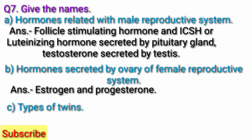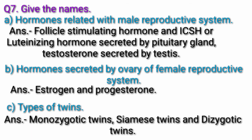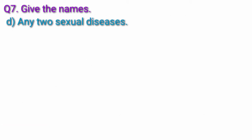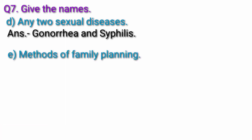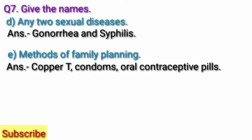C. Types of twins. Answer: Monozygotic twins, Siamese twins, and Dizygotic twins. D. Any two sexual diseases. Answer: Gonorrhea and Syphilis. E. Methods of family planning. Answer: Copper IUD, condoms, and oral contraceptive pills.